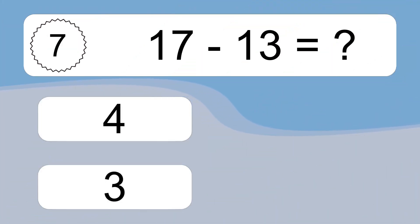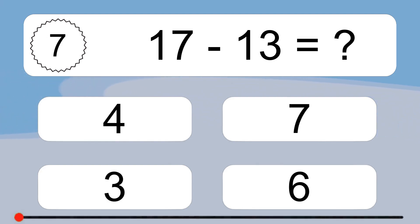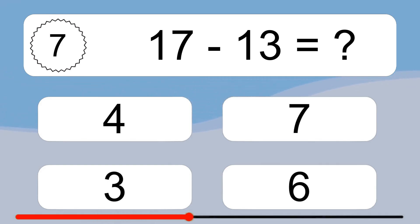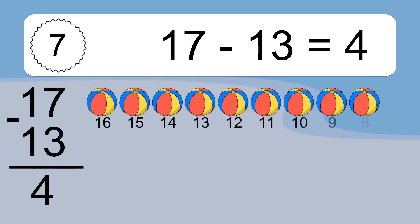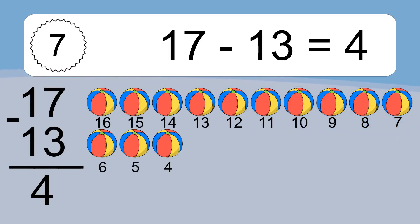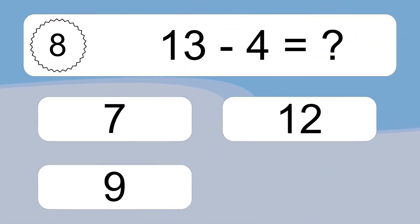17 minus 13 equals what? 17 minus 13 equals 4. Let's count it: 16, 15, 14, 13, 12, 11, 10, 9, 8, 7, 6, 5, 4.